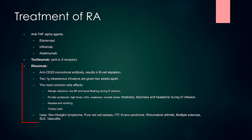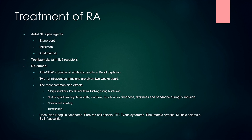Rituximab is also useful — it is an anti-CD20 monoclonal antibody that results in B-cell depletion. The most common side effects of rituximab are allergic reactions, flu-like symptoms and tumour pain. Rituximab can also be used in other conditions like non-Hodgkin's lymphoma, pure red cell aplasia, ITP, multiple sclerosis, SLE and vasculitis.